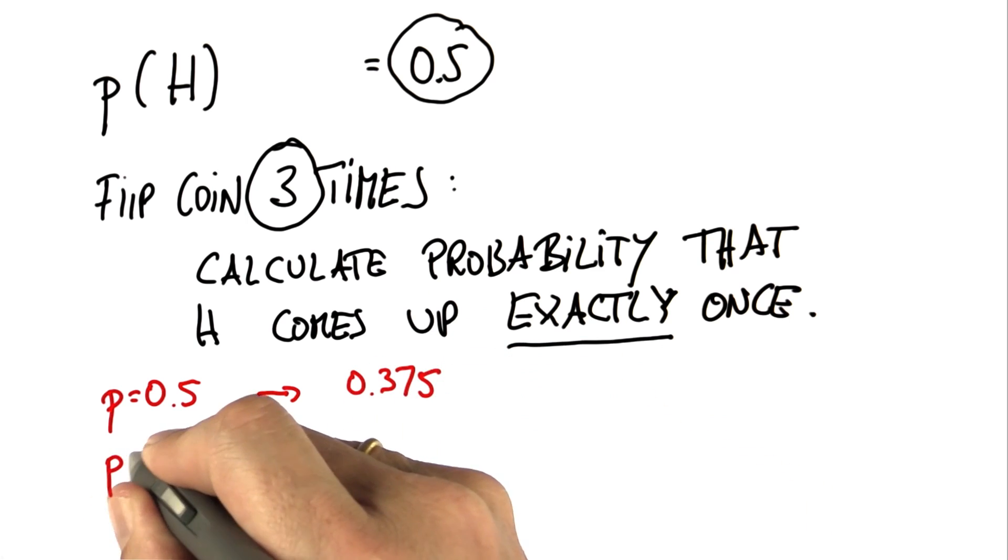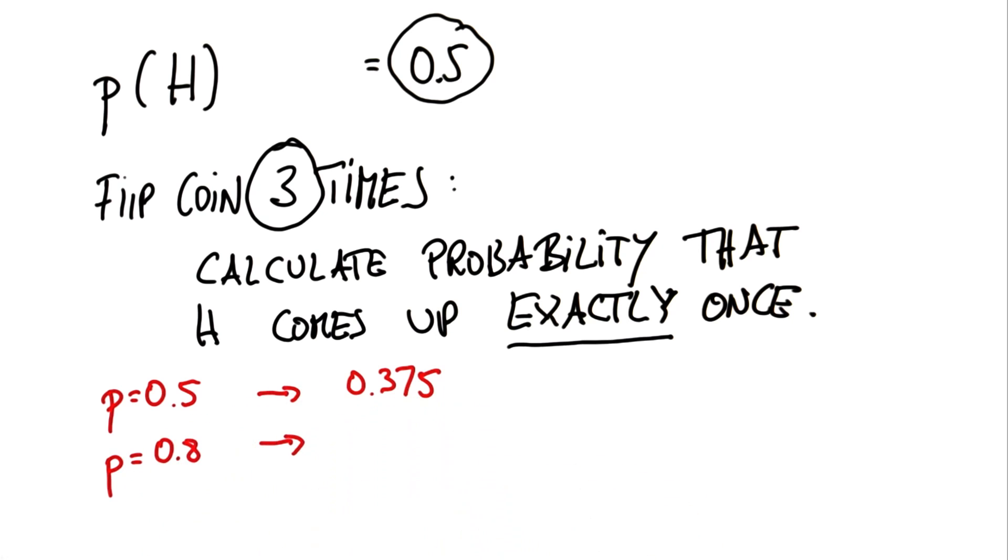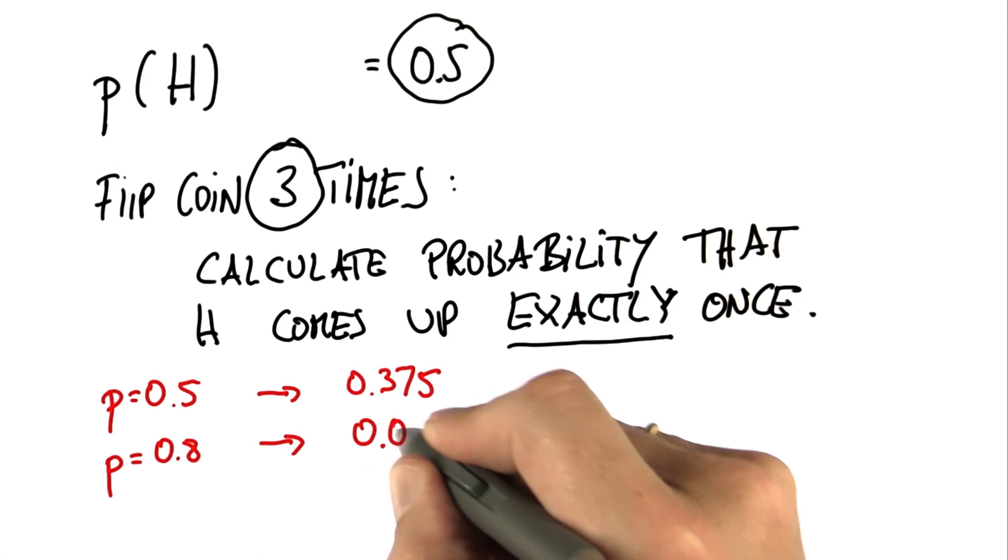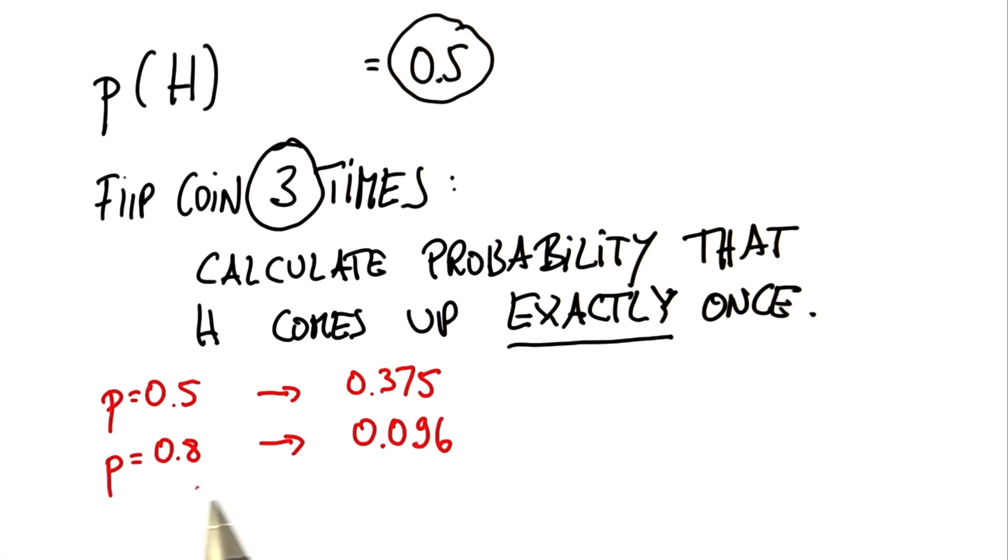If you set p to 0.8, the number actually goes down. It's 0.096. So you can check your implementation to see if you get the exact same numbers.